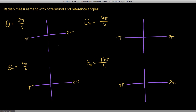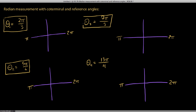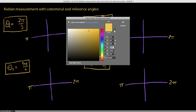Hi folks. I have a goal in this video, and that is to make it as short as it can possibly be. What you see here is I've set us up with four different angles, all in radian measurement, which I would like to sketch. But not only sketch — I would like to find a positive and a negative coterminal angle for each, as well as find the reference angles. Let's do the reference angle bit first. So let's start in the top left corner.